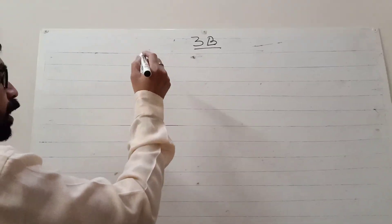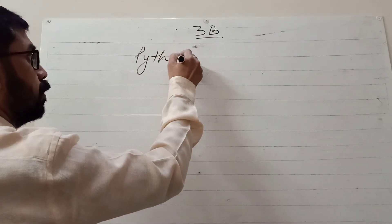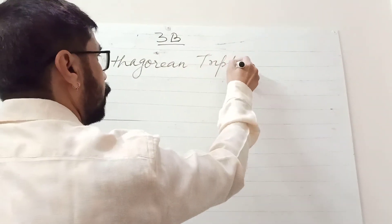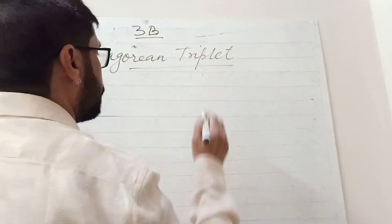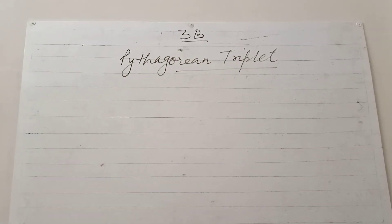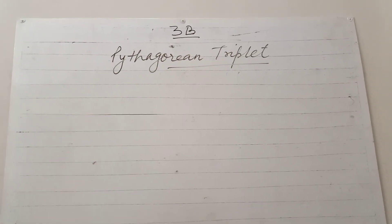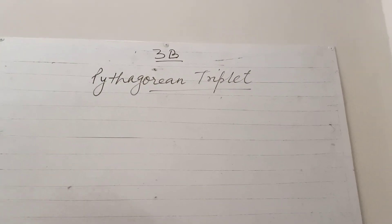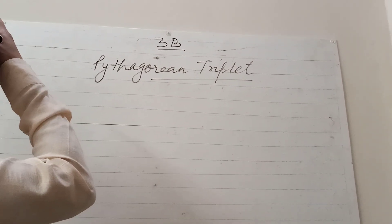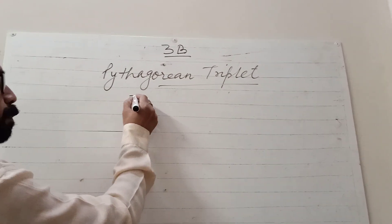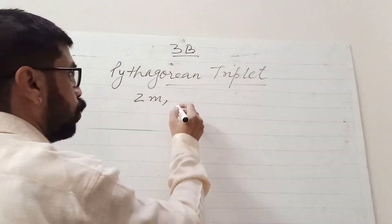Now, an important thing: Pythagorean triplet. A Pythagorean triplet is a triplet in which we take three numbers. The first one's square equals the second square plus the third square. Our Pythagorean triplet is written in this form: 2m,